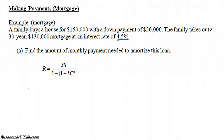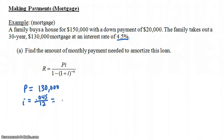R is what we're looking for, which is the payment amount. P is the present value — not the value of the house ($150,000), but the value of your loan: $130,000. I is the interest rate per period, so it's 0.045 divided by 12, which equals 0.00375. N is the number of payments: 12 payments a year for 30 years gives 12 times 30, which is 360.